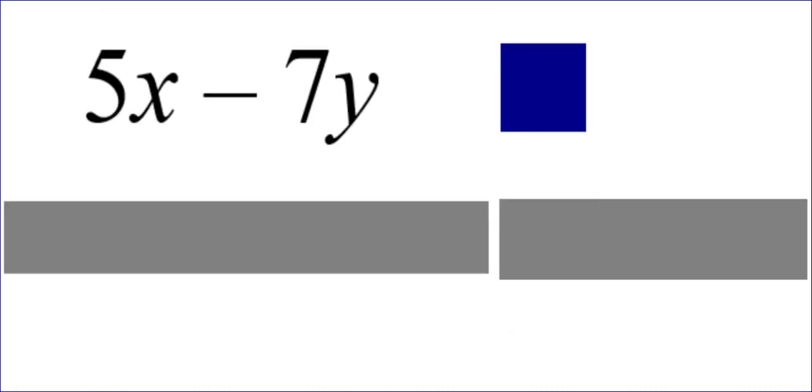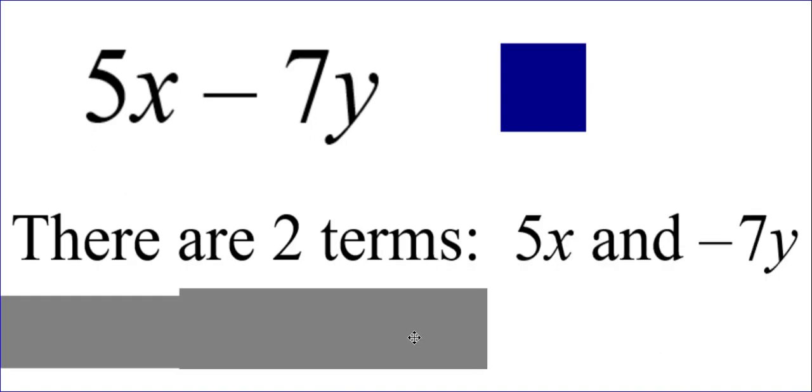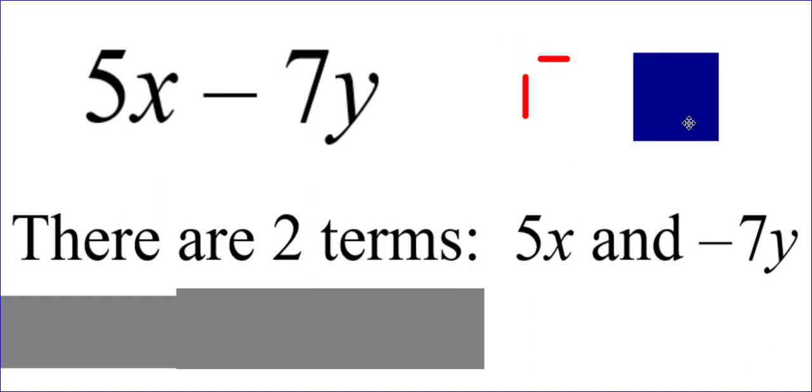Now, what about the algebraic expression 5X minus 7Y? There are two terms: 5X and negative 7Y. Now, you might be surprised. Why is it negative 7Y?